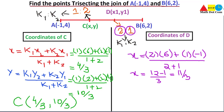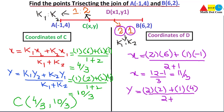Now we find the y-coordinate of point D. y equals k1·y2 plus k2·y1 divided by k1 plus k2. k1 is 2, y2 is 2 (the y-coordinate of point B), k2 is 1, and y1 is 4 (the y-coordinate of point A), divided by 2 plus 1. That gives 4 plus 4 equals 8, so we get 8 over 3. Therefore, the coordinates of D are 11/3 and 8/3.